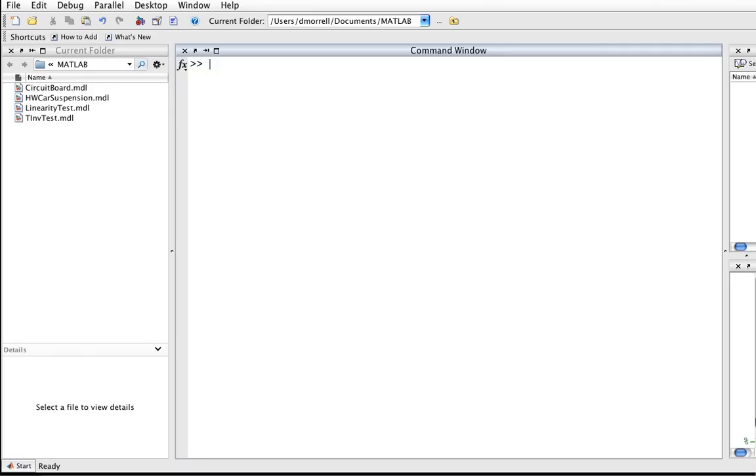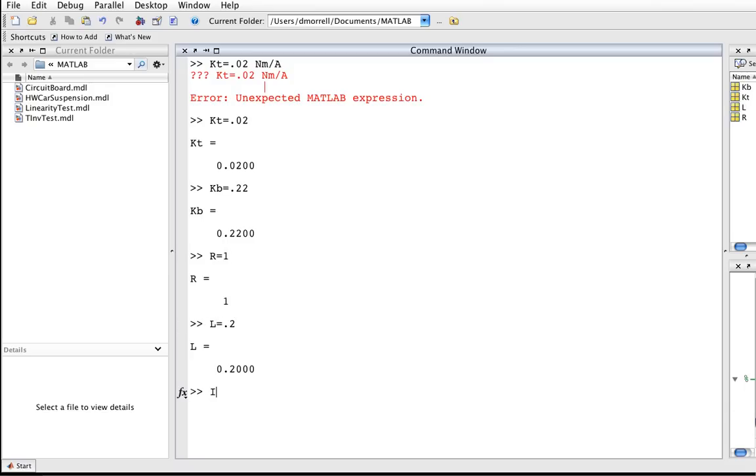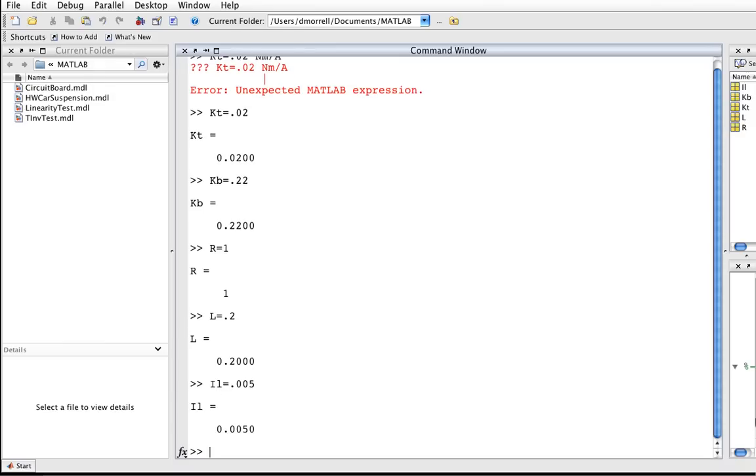So, we have KT is equal to 0.2 newton meters per amp. You'll notice that MATLAB doesn't like that, because MATLAB doesn't know what to do with the units. It doesn't know how to handle units. It thinks that you're trying to get it to compute something, and it doesn't understand. So, when you're using MATLAB as a calculator, you can't have it keep track of the units. You're going to have to keep track of the units yourself. So, we'll type in all the values of the constants.